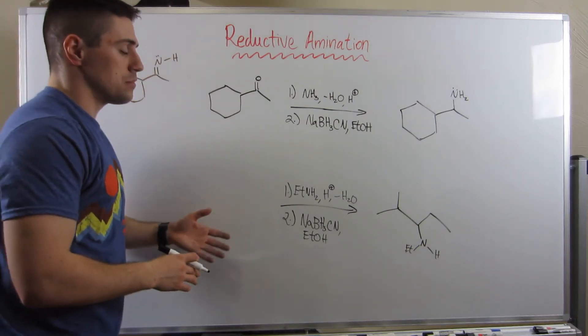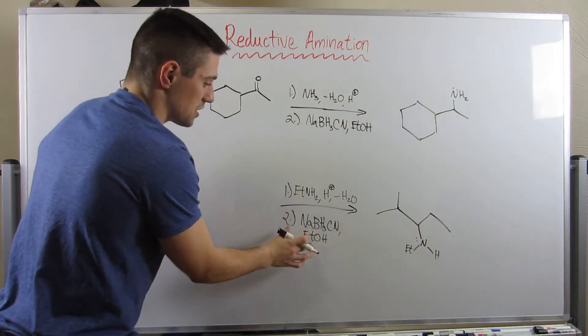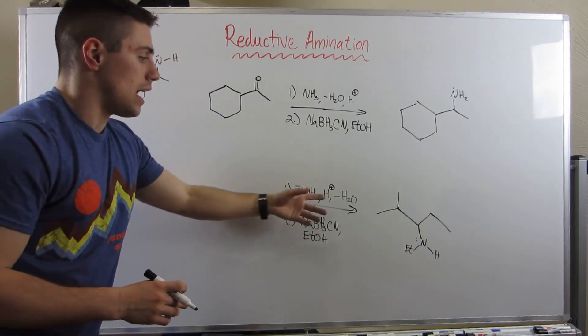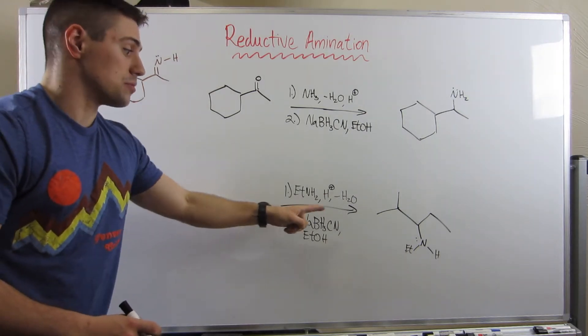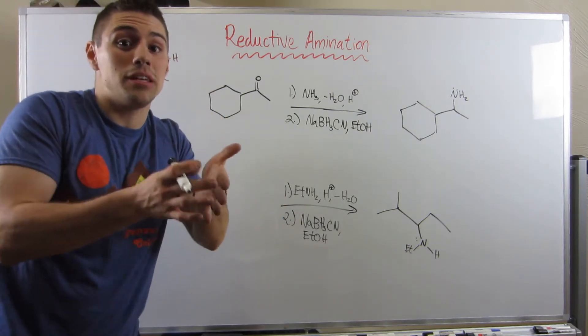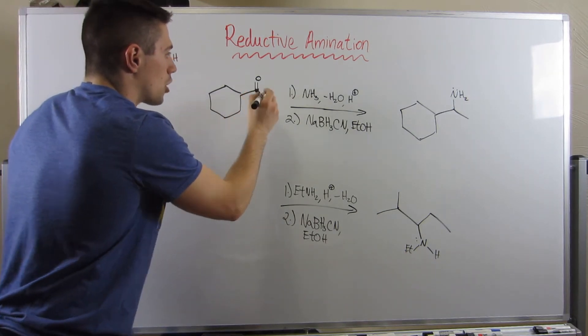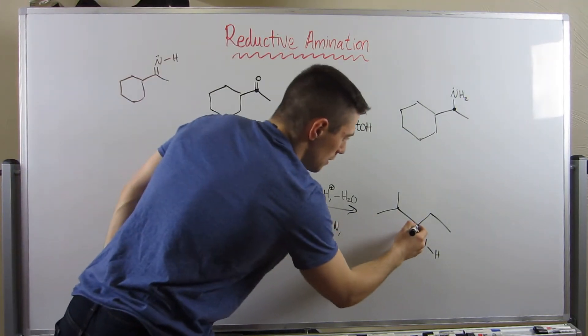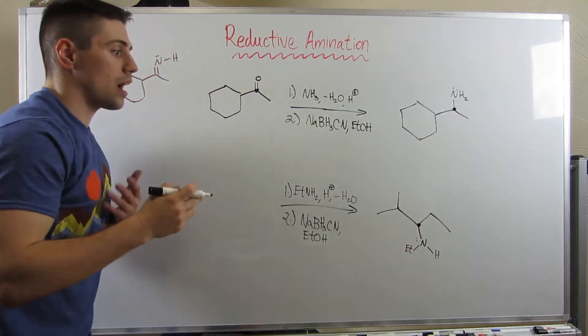Down here, we see our product. We see our first and second step. First step, we see EtNH2. We see ethylamine, H plus minus H2O. Must have made an imine. And then, with our sodium cyanoborohydride and ethanol, must have reduced that imine to an amine. So, remember, just like up here, your carbonyl carbon becomes the one attached to the amine. So, you see, right down here, this is where our amine is attached to our alkyl piece.